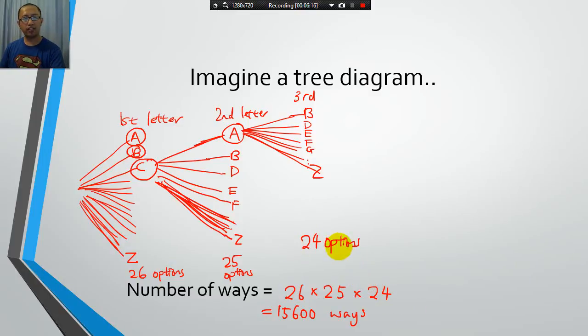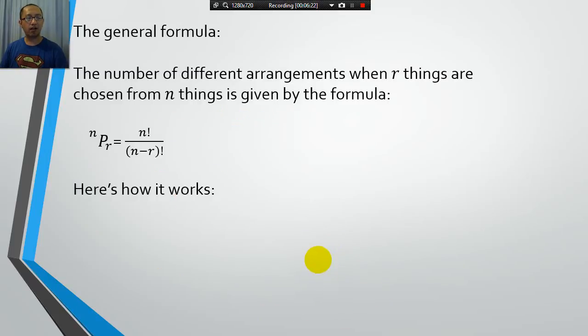So it's all good doing it out of a tree diagram, but we want a faster way. We don't have to draw a tree every single time. So the general formula for doing this is the number of arrangements when R things are chosen from N things is given by this formula. So that's essentially what we're doing. We're picking R things out of N things. We're picking three letters from 26 letters. And how many different arrangements can we have.